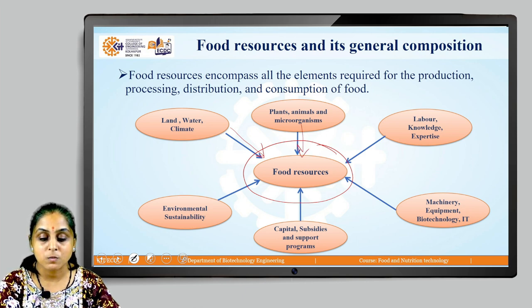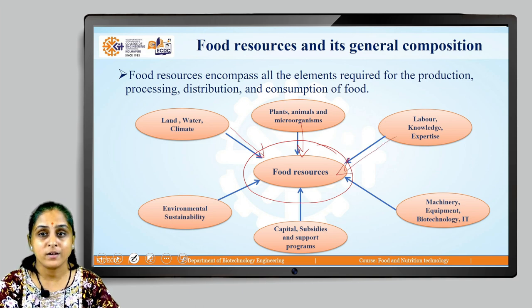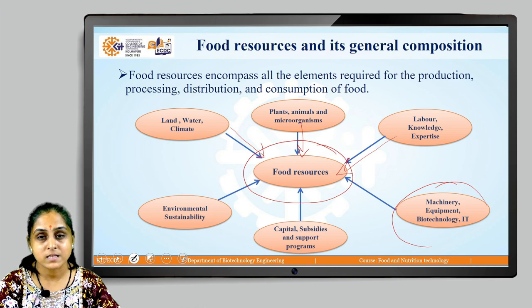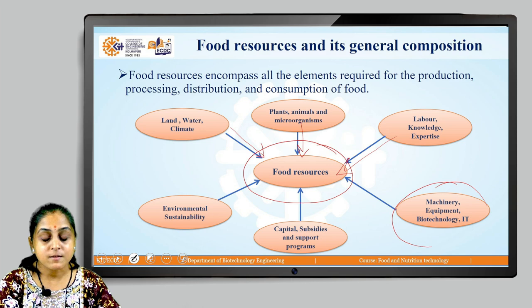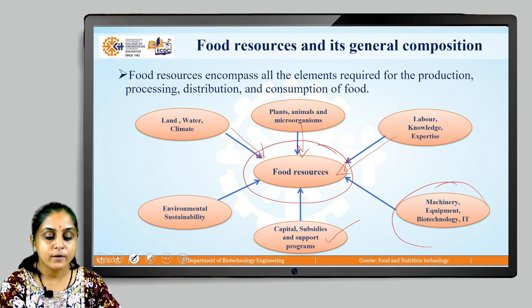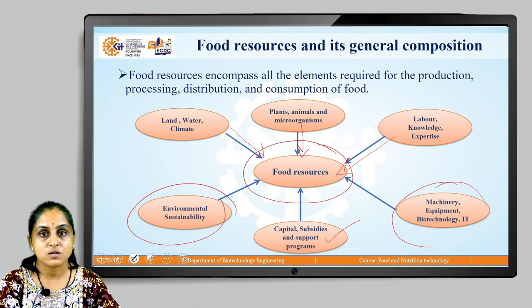Along with natural sources, laborious work is required, knowledge in the domain is required, expertise is required, machineries and equipment are required. Biotechnology — inventive techniques and technologies under biotechnology — are required. Capital is important, subsidies are important, and support programs from the government are essential. Environmental sustainability is also one more important factor which definitely affects food resources.